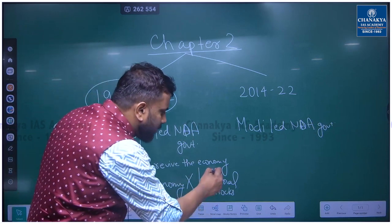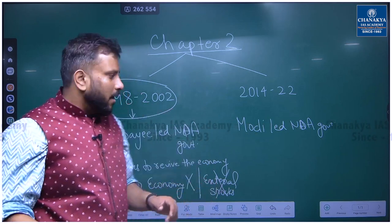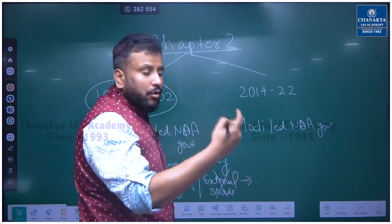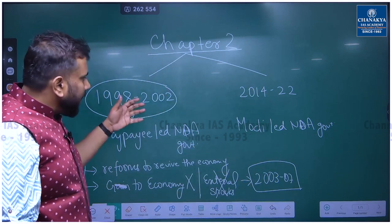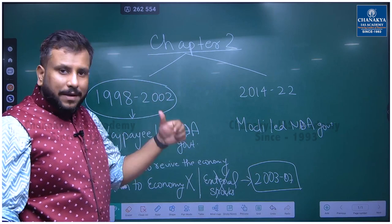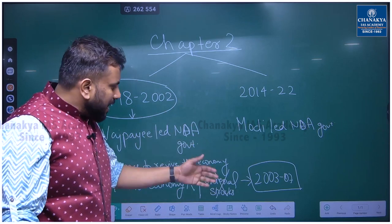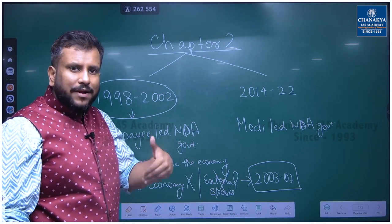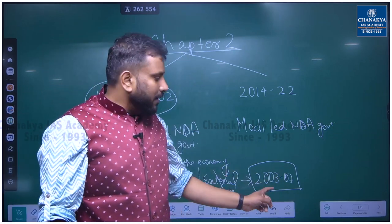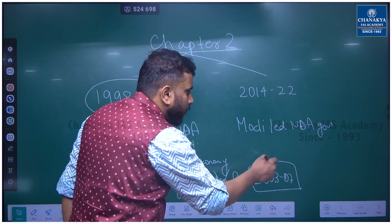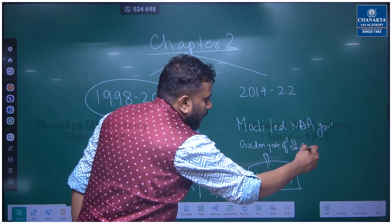The survey says that once those external shocks ended — once these temporary problems faded — our economy grew at a very fast rate between 2003 and 2007. The reforms of that government did not pay off during its own tenure because of external shocks, but once those temporary problems faded, real growth started between 2003 and 2007, which is why this period is referred to as the golden years of the Indian economy.